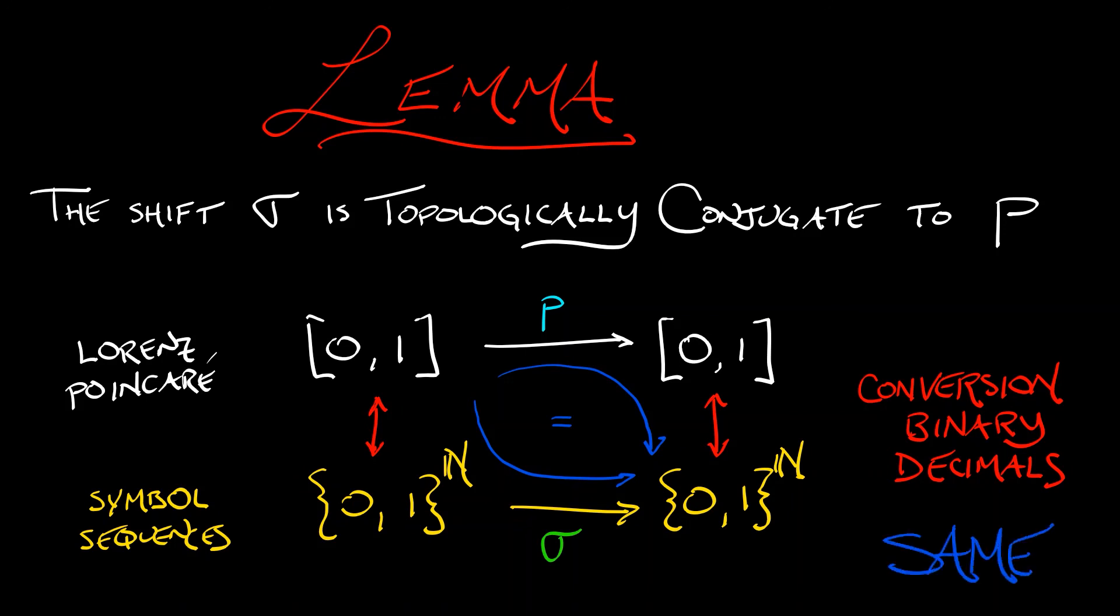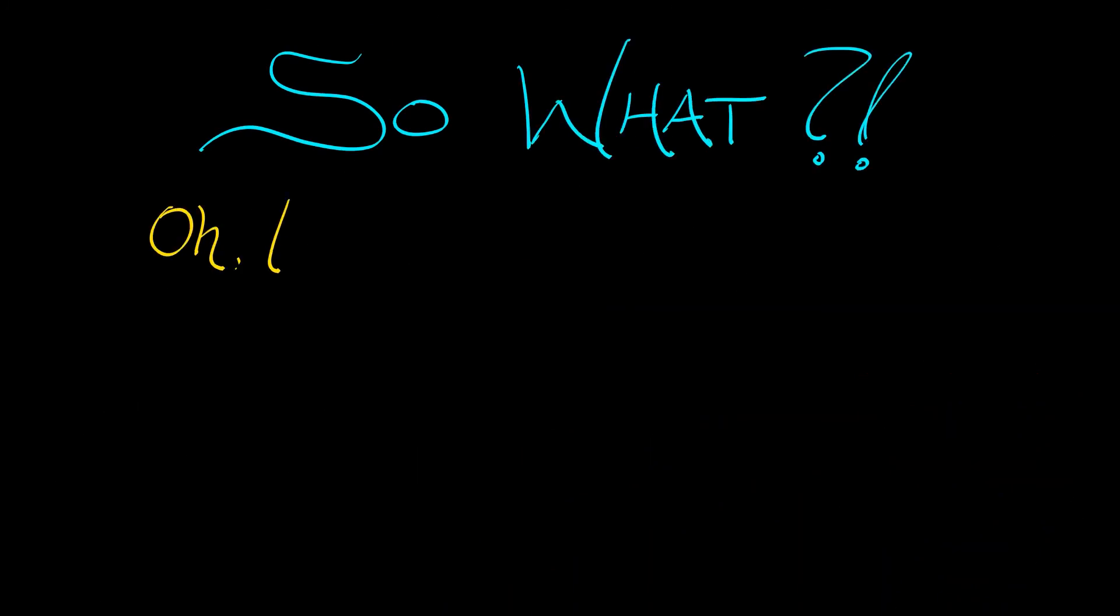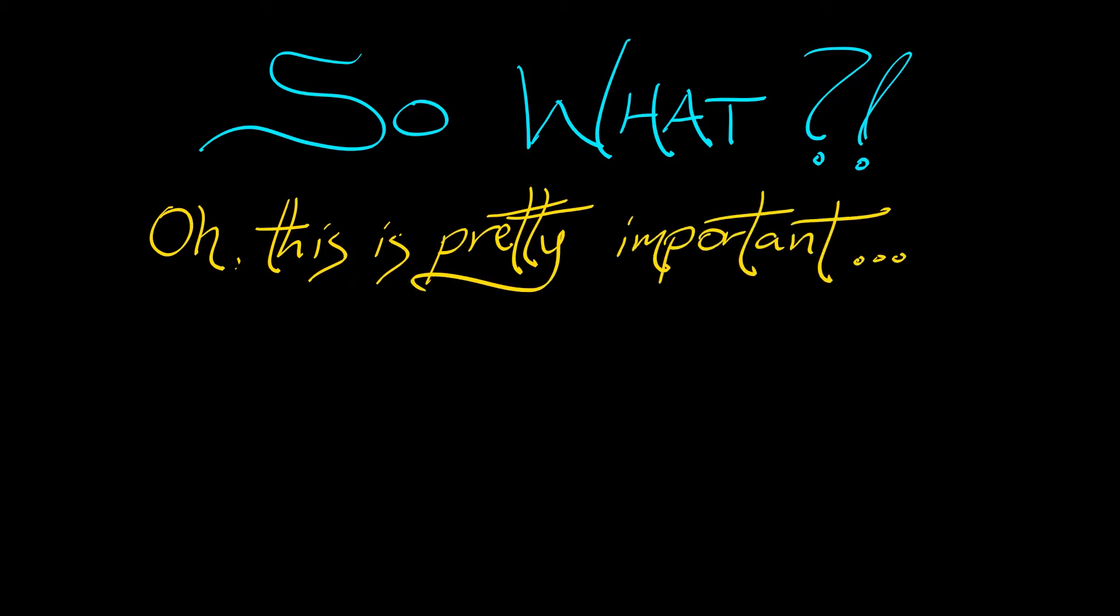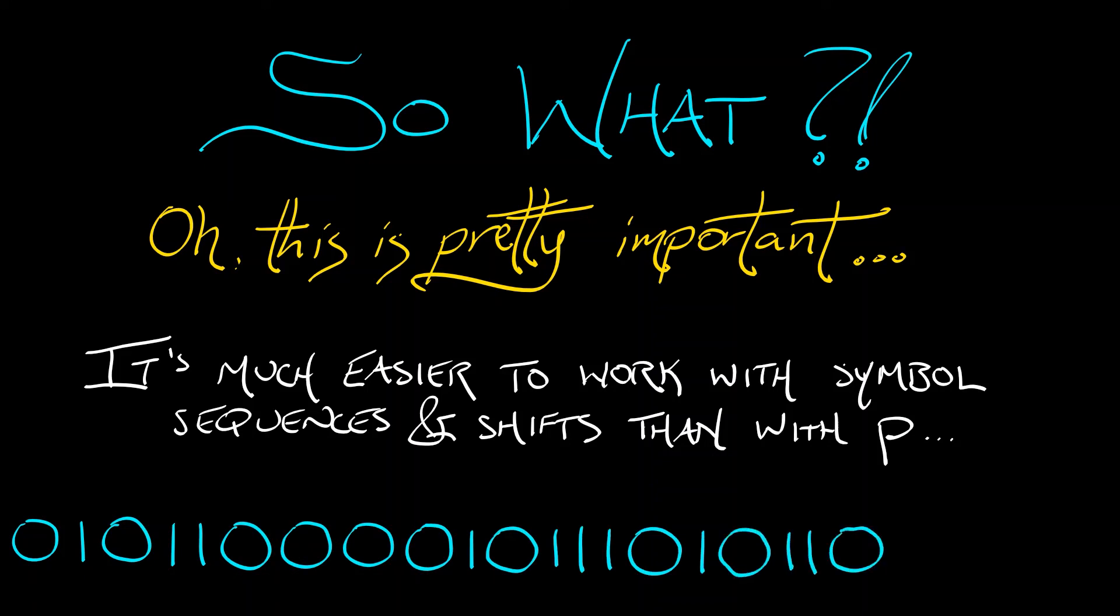I am merely stating it as a formal lemma because it's going to be useful to us later. Now I get it, so what, what's the big deal? Oh no, this is pretty important. Why? It is so much easier to work with symbol sequences and shifts than it is to work with our Poincaré return map p. Even though p is really simple, it is still so much simpler to work with symbol sequences, as we shall see.